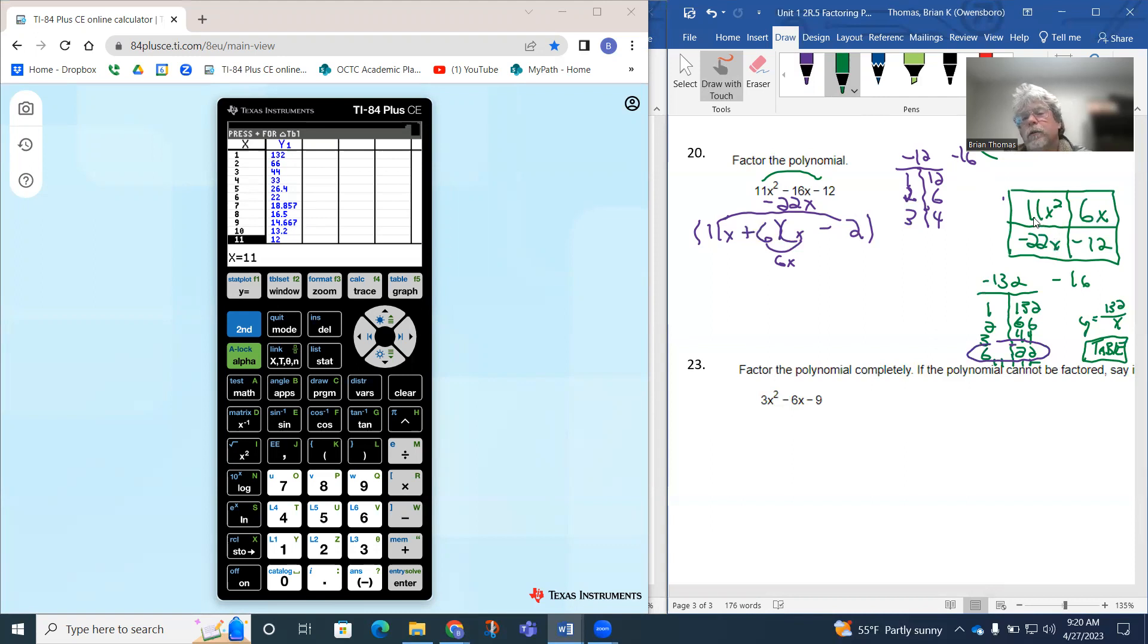Now the catch is you want to identify the GCF of this top row. And the way I put it, the only thing that's in common between 11x squared and a 6x would just be x. So this x is actually going to come out, and then we just start piecing it together. What times x is 11x squared? Well, we need 11x there. X times 11x is 11x squared. What times x is 6x? Well, we need a 6. X times 6 is 6x.